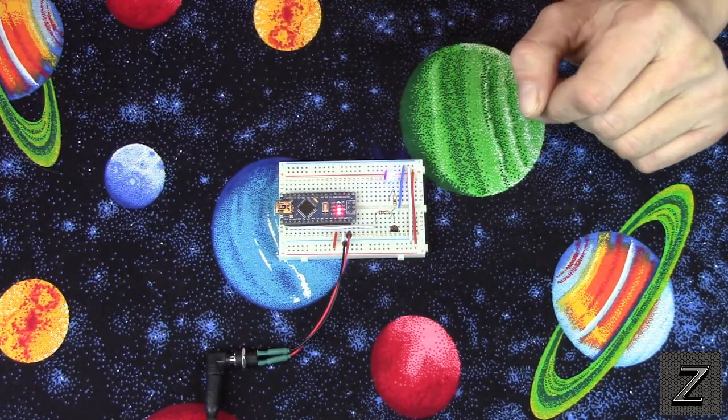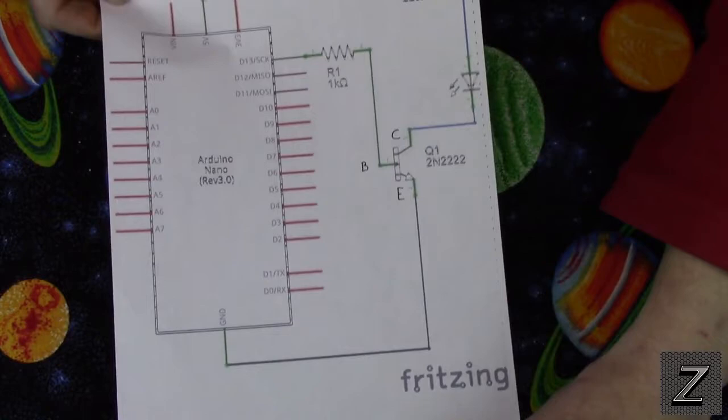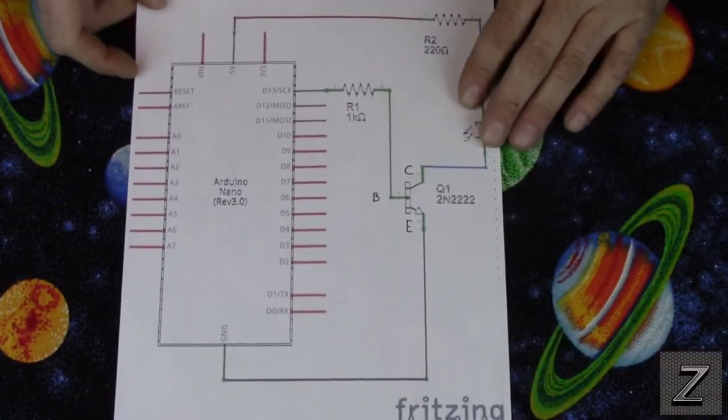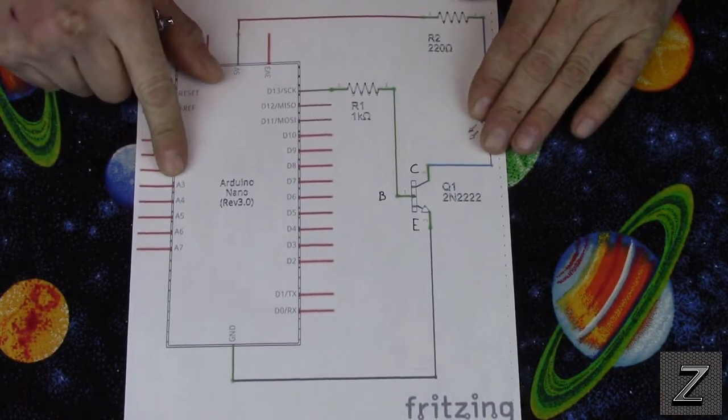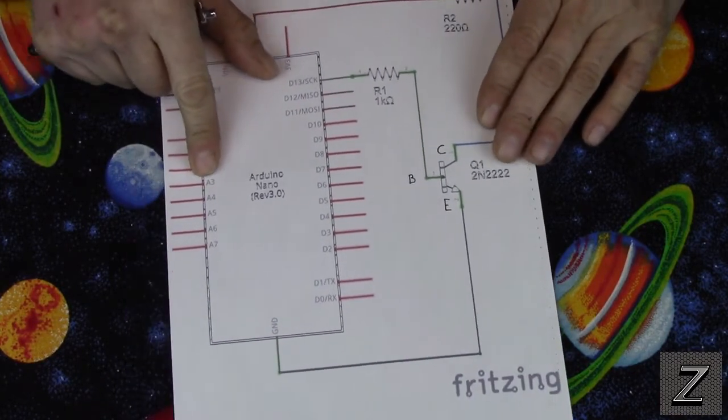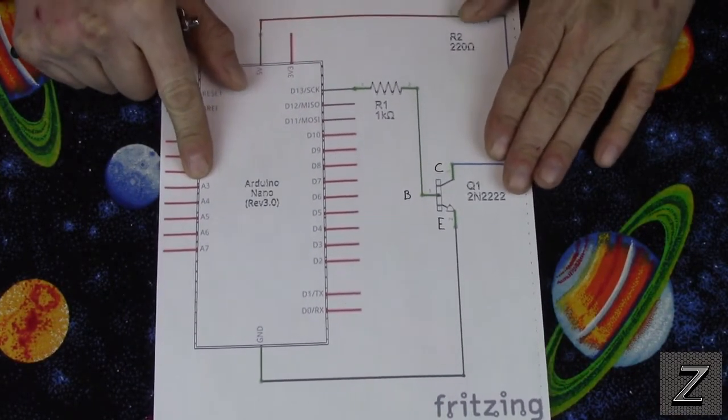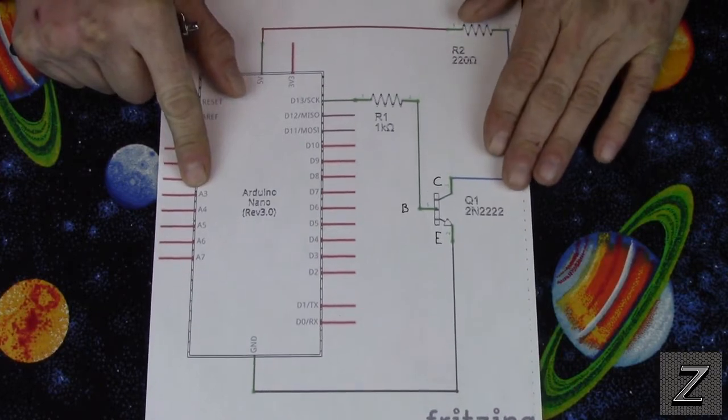So let me show you how it works and I printed out a schematic of this exact circuit I just had hooked up, and I'll go over it and show you how you can use the transistor as a switch in your Arduino project.